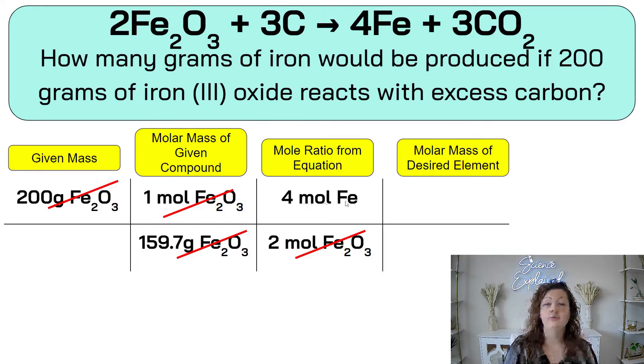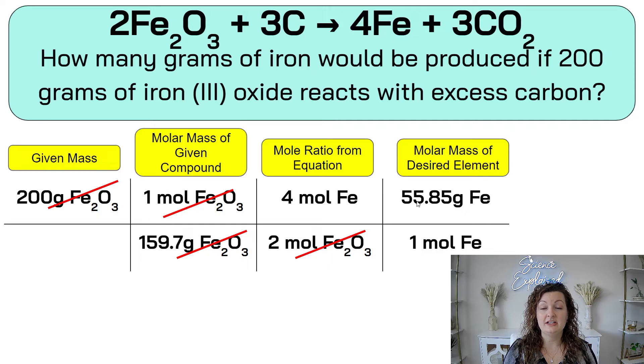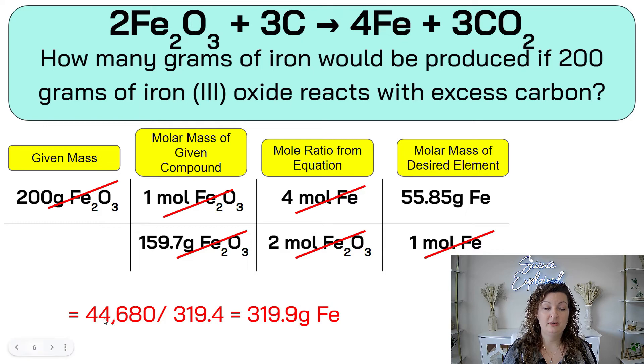I can cancel out my units right now of moles of Fe2O3. And then we can do diagonal down again. So moles of Fe needs to go right here as well. And this is going to be the box that I always want to end at. How many grams of iron? That means I need to end with grams of Fe. So this is going to be another molar mass. So one mole of Fe is equal to the molar mass of Fe. And we can go to the periodic table, see that iron is 55.85 grams. So we can cancel out those moles of Fe units. And now do our math. We're going to multiply the entire top. So 200 times one times four times 55.85. And we end up getting 44,680. And we're going to divide that by the bottom. We multiply across on the bottom. So 159.7 times two times one. And we end up getting 319.4. And then we divide these in our calculator. Top number goes first in the calculator. And you end up getting 319.9 grams of iron.